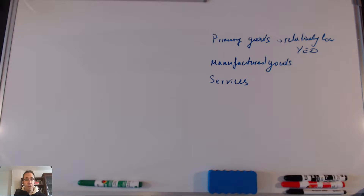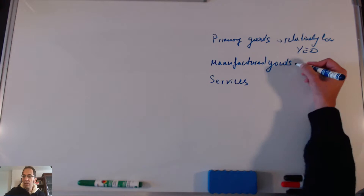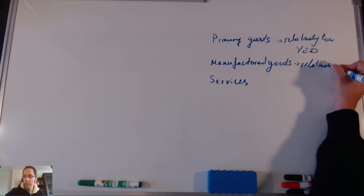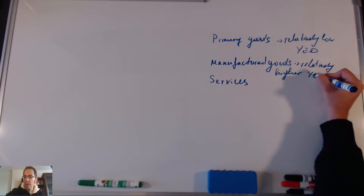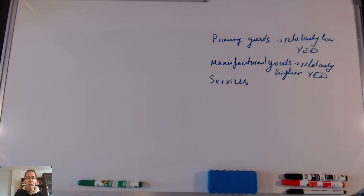Manufactured goods — some of them can be necessities, some of them can be luxuries, depending on the product. But generally we are going to observe a relatively higher value for income elasticity of demand. Something like a car can be a luxury good depending on the income of the individual, and something like a marker — which I use to write — would be a necessity I need in order to record my lessons.